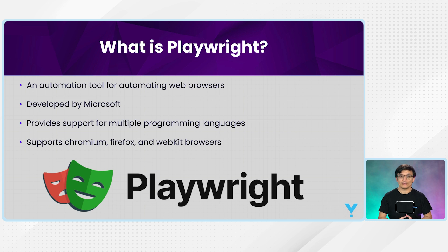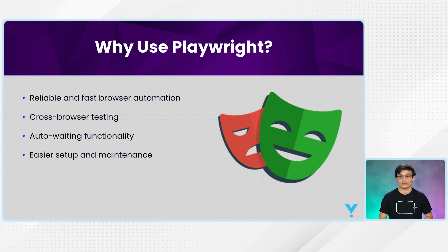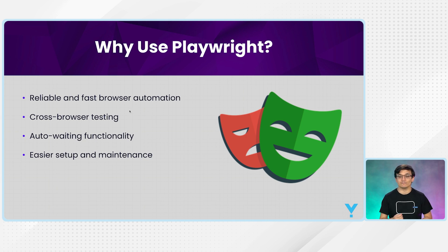Why should we use Playwright? The number one reason is it is more reliable and it is the fastest browser automation tool in the world. It is much more straightforward, faster, and user-friendly. The second reason is that cross-browser testing is supported and it's much more convenient as well.